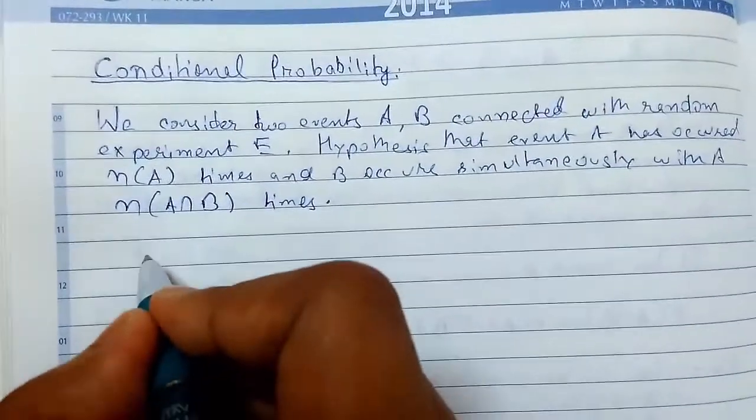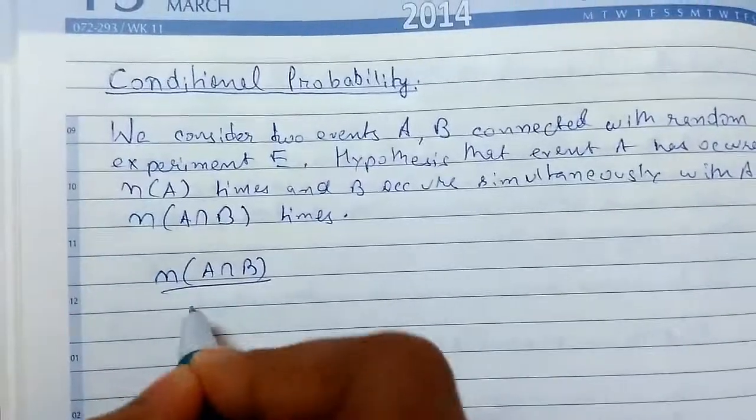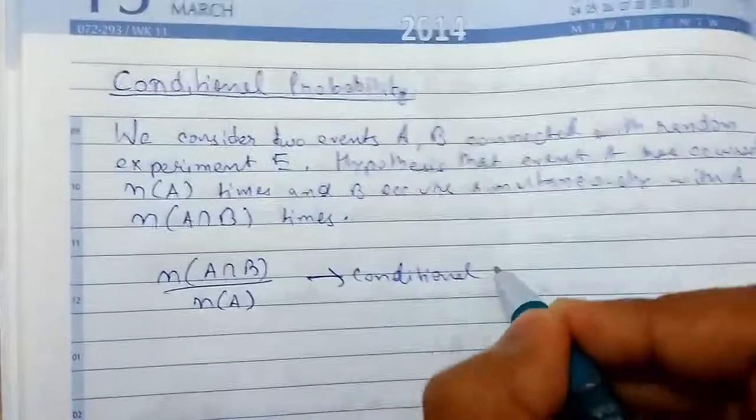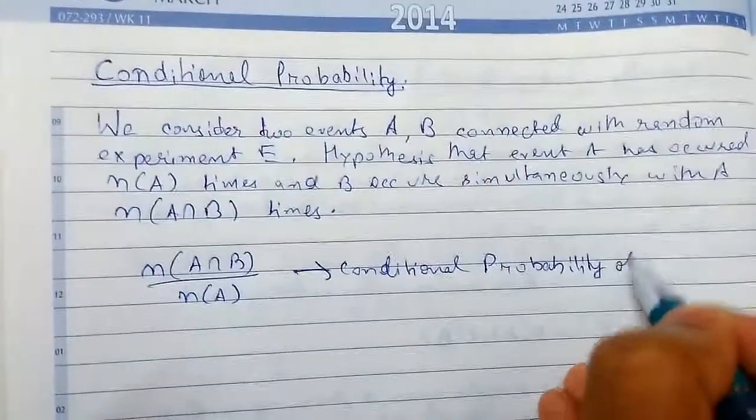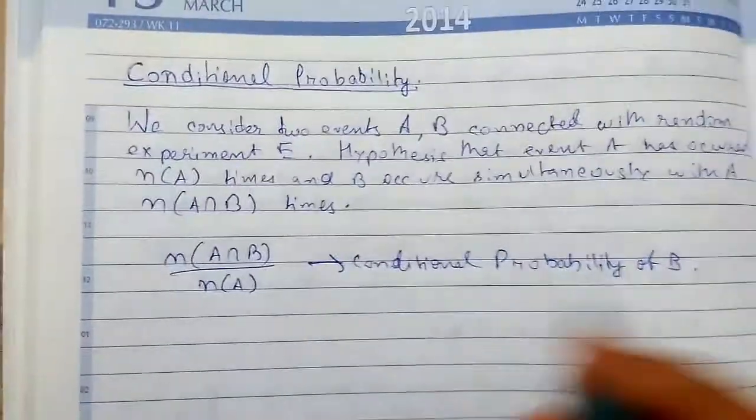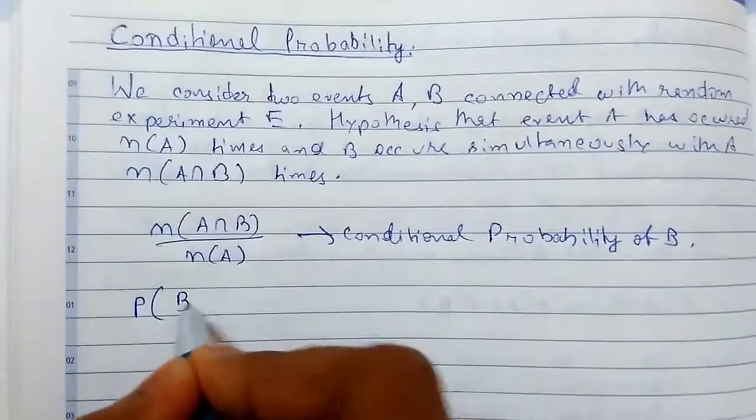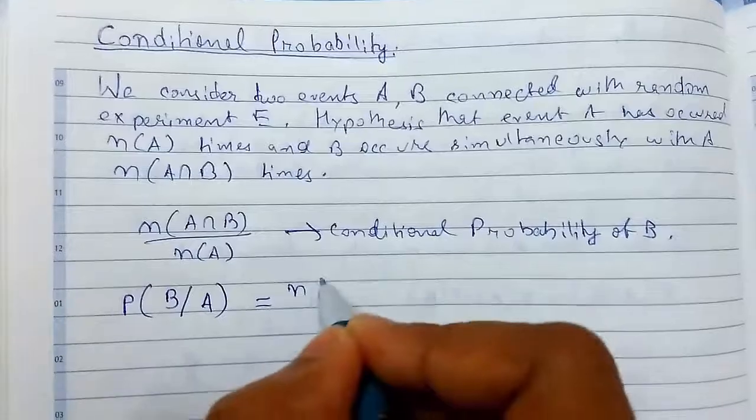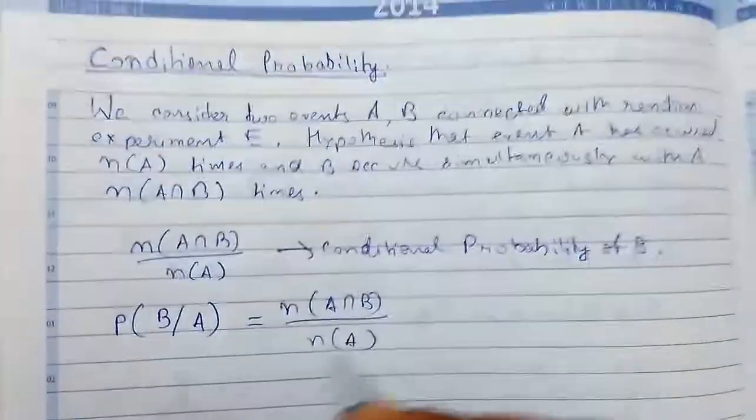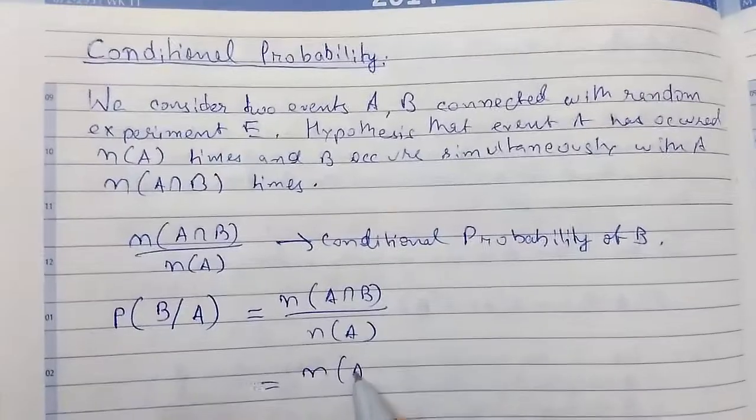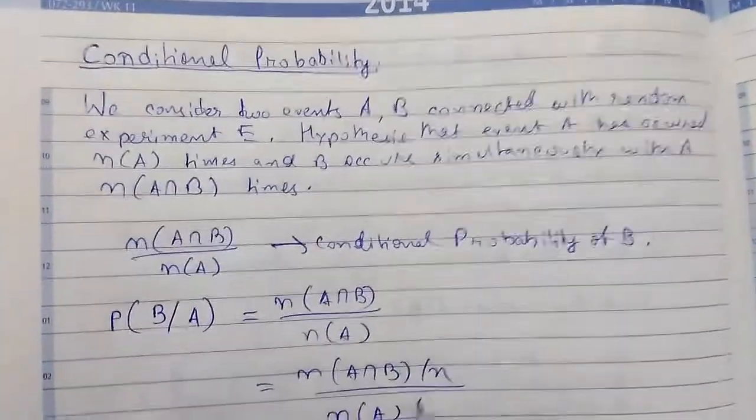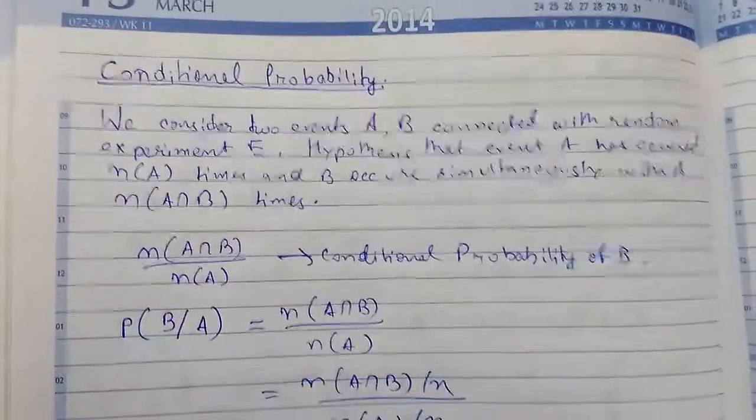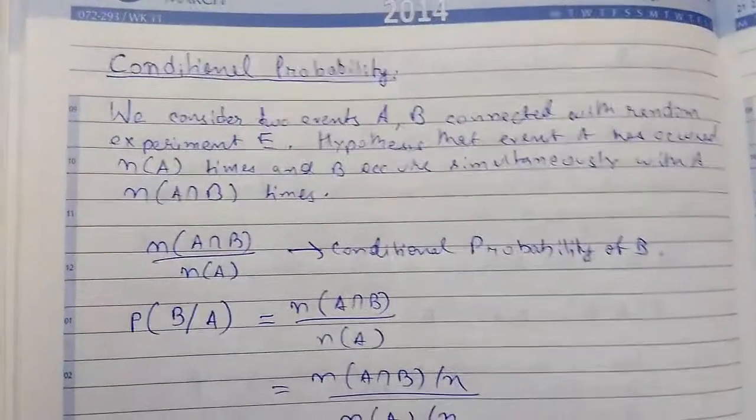Then the ratio of N(A intersection B) upon N times A is known as the conditional probability of B on the hypothesis that A has occurred. So it is defined as P(B/A), probability of B on the hypothesis that A has occurred. If you divide both numerator and denominator by N, we get P(A intersection B) upon probability of A. So this is the formula of probability.